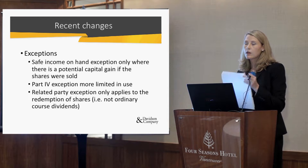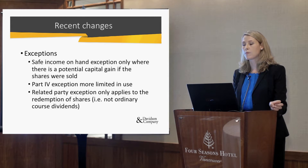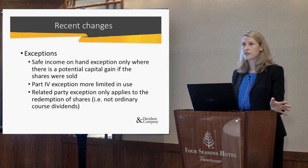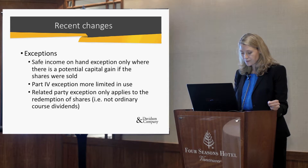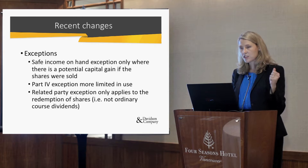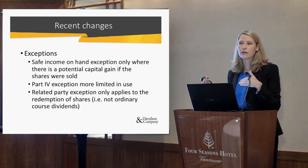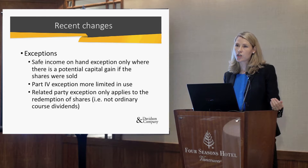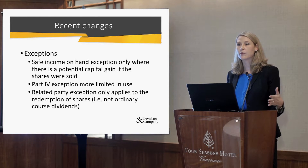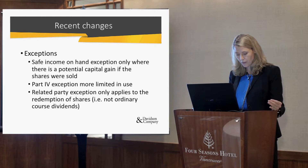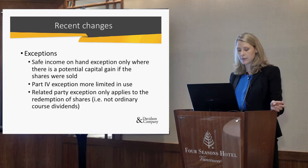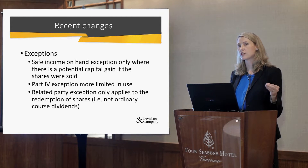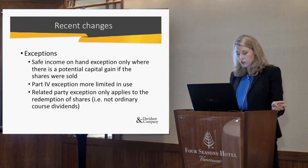You still have the ability to use safe income on hand, but its use has been limited significantly, especially where there is a potential capital gain. Safe income on hand is only available where there is a potential capital gain — if your cost base and your fair market value of the shares are the same, you no longer have the ability to use safe income on hand. They also changed the Part IV exemptions, making them much more limited in use. The related party exemption now only relates to the redemption of shares.